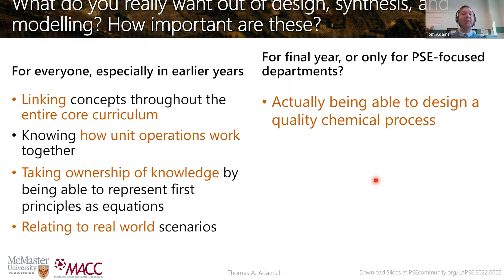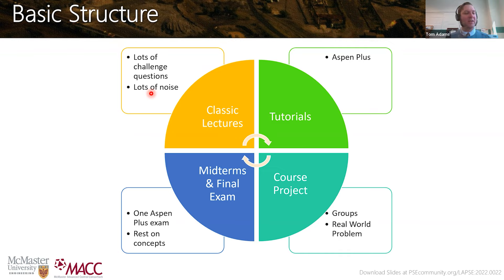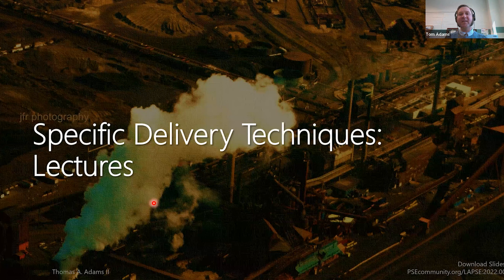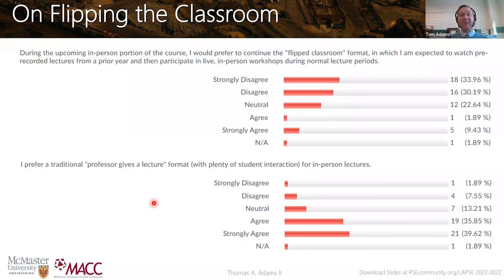I'll show you a little about my course structure. It's roughly a quarter in each area of focus: classic lectures, challenge questions, tutorials, and the course project. The tutorials use the Learn Aspen Plus book. The course project integrates the entire course and really drives it, done in groups. We also have midterms and finals. This doesn't mean it's how you should do it — you need to find a system that works for your personality, curriculum, and students. I've changed it a lot over the years, and that's just the nature of teaching.